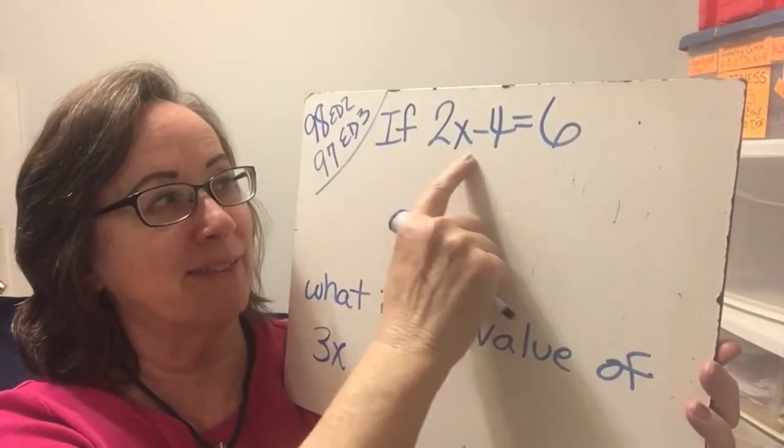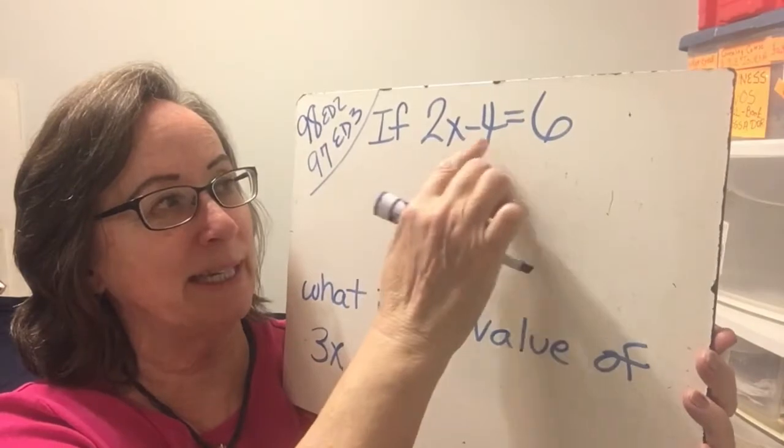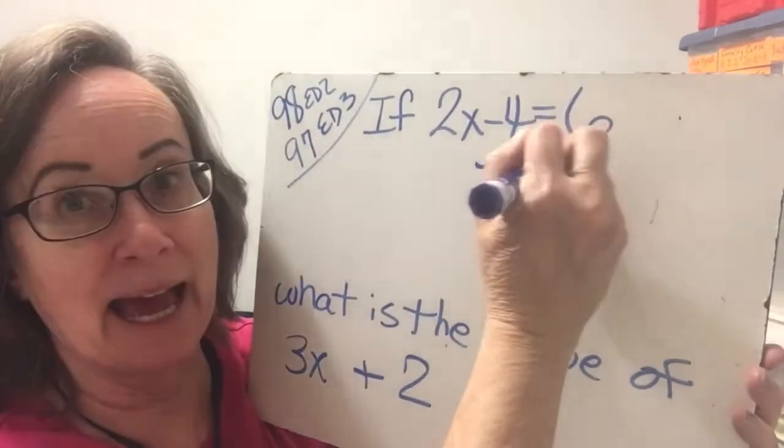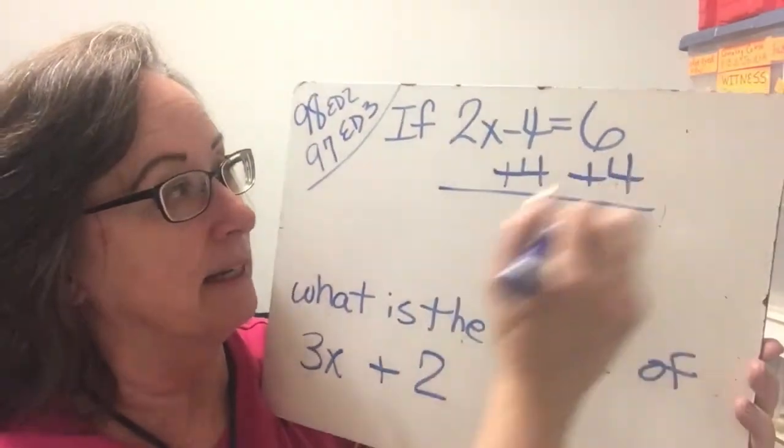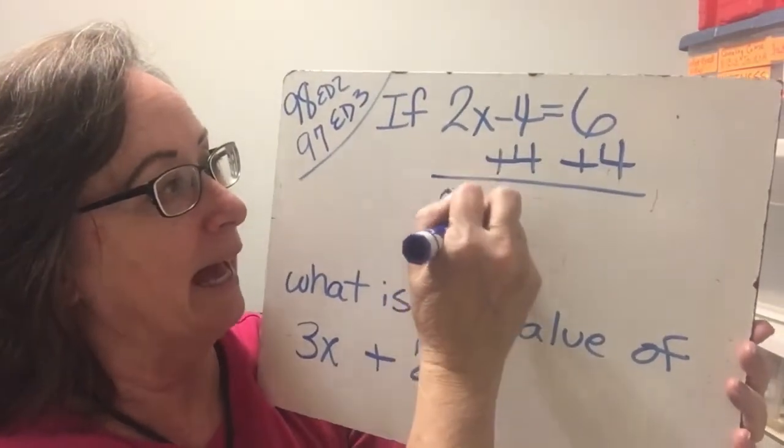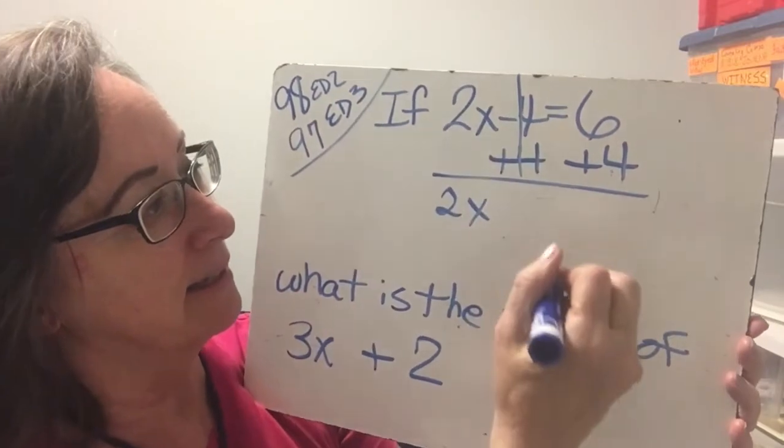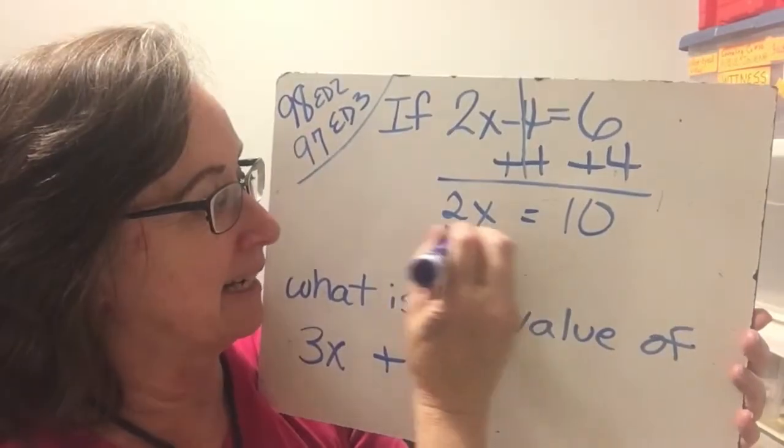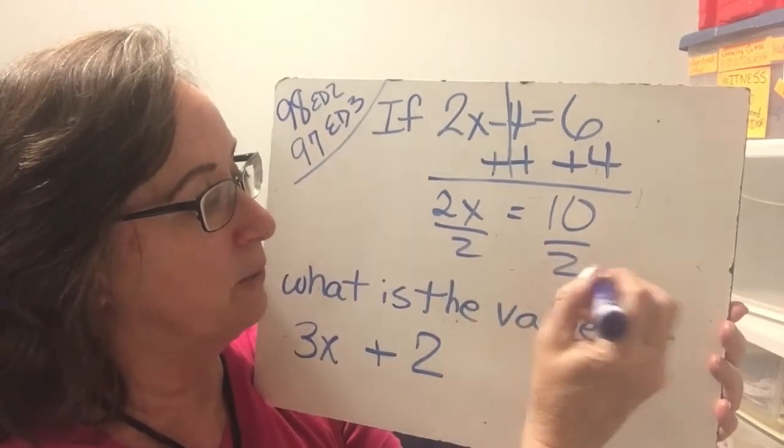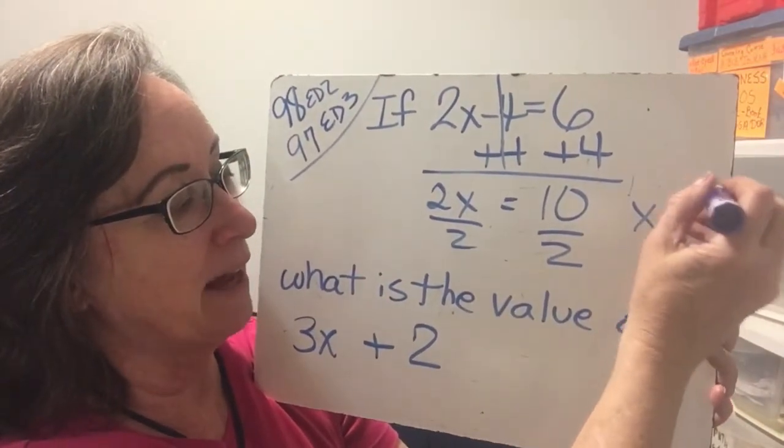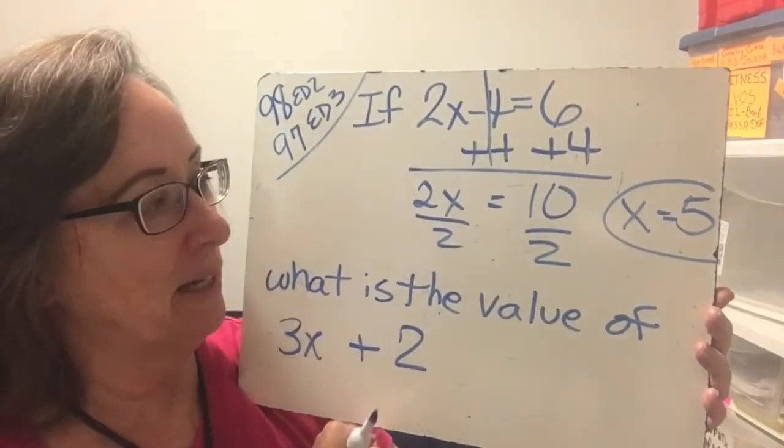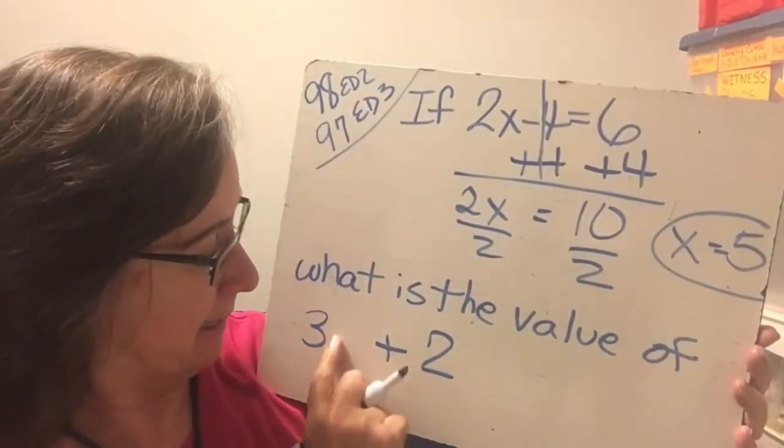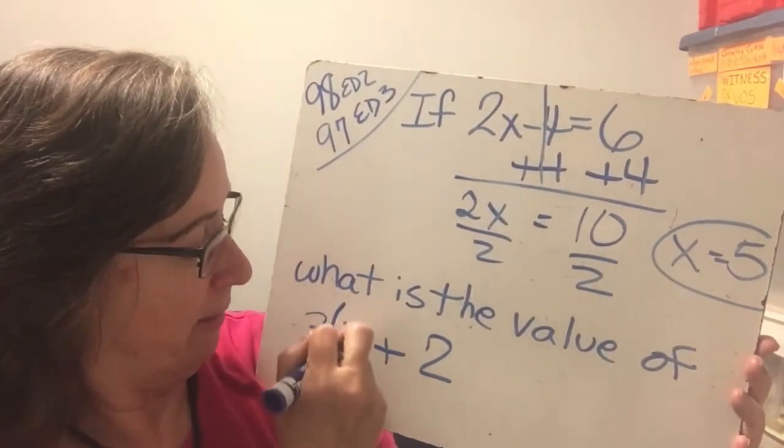Hopefully you did that. And now we are going to solve this so that we can figure out what this is. So here we have the x in one spot. So we need to get rid of the negative 4. We will add a 4 and add a 4 to the other side. And now we have 2x. This cancels equals 10. This one's easy, isn't it? Divide by 2, divide by 2. X equals 5.